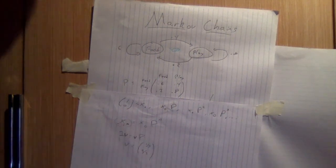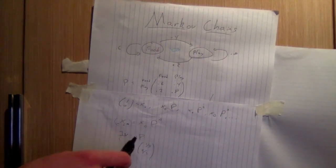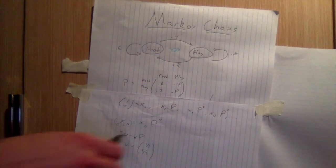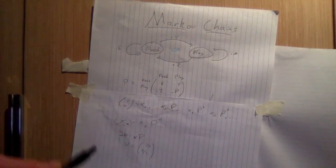And so under certain conditions with P, we can actually, this eigenspace has dimension 1 and so this eigenvector is sort of unique and we can actually find it using basic linear algebra.